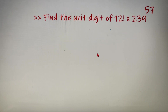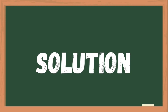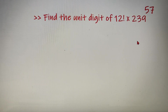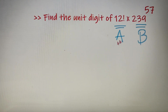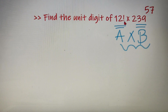Moving forward to our second question, we have to find out the unit digit of 12 factorial into 239 raised to the power 57. I would like you to try to solve this question by yourself and then come back for the solution. For solving these kinds of questions, we take the first number as A and the second number as B, and we just have to find out the unit digit of the product A into B. So here A equals 12 factorial and B equals 239 raised to the power 57, and we separately find the unit digit of each.